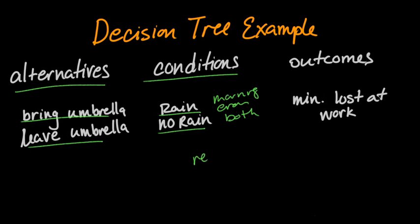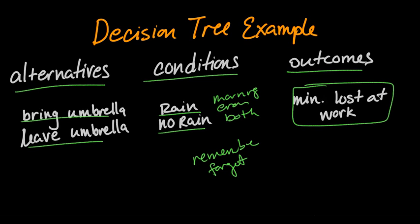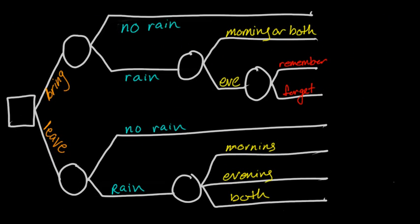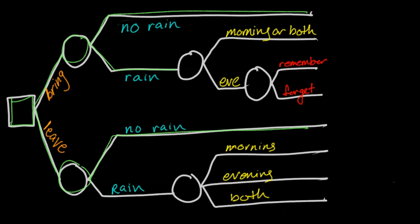If it rains in the evening, we might be concerned with whether we remember the umbrella or forget it. This is what the decision tree might look like. We start on the left with the decision node, and there are two alternatives: to bring the umbrella or to leave it. Whether we bring the umbrella or not, we might be concerned with whether it will rain. The decision tree does not have to be symmetric, but in this case, whether it rains or doesn't rain is independent of the alternative that we choose. So these two chance nodes actually need to be equal. Sometimes we label these C1, C2, C3, C4, and then we can write information down at the bottom.